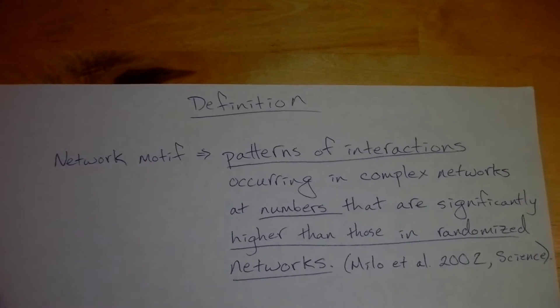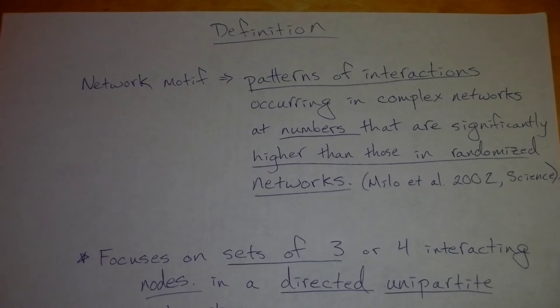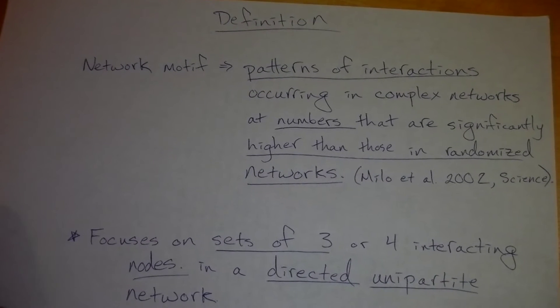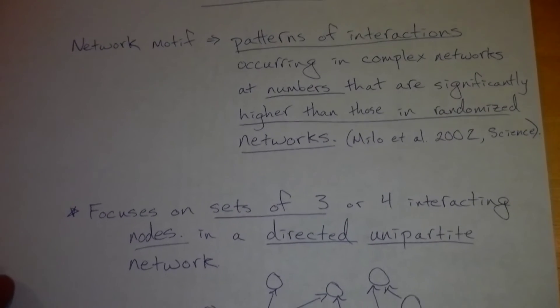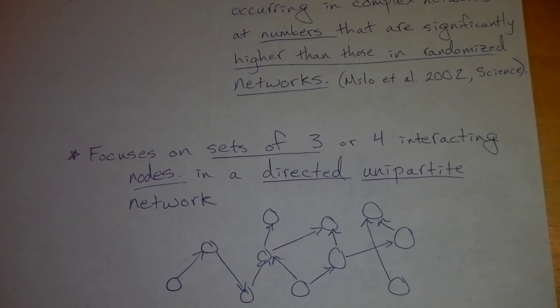And when we're talking about patterns of interactions, it really focuses on sets of three or four interacting nodes in a directed unipartite network. So that's a lot of jargon, but let's go to an actual network so you can see how this procedure might actually work.